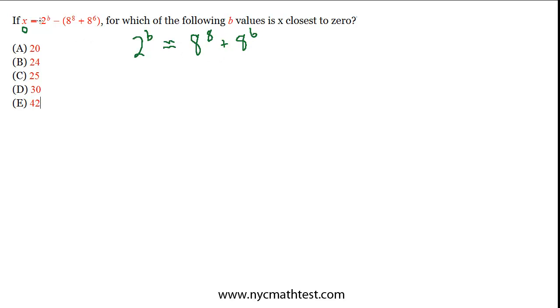Because when they're close in value, then 2 to the b minus that thing, if it's close in value, will be close to 0. So we want to find the value of b that makes those closest to being equal.